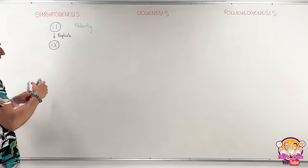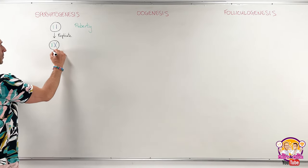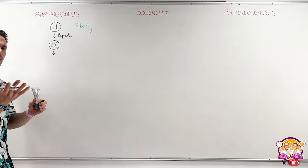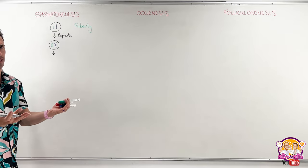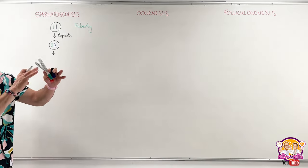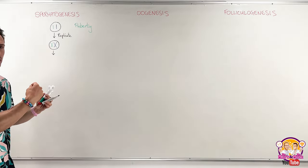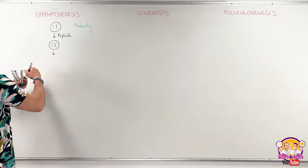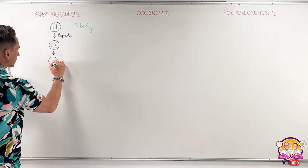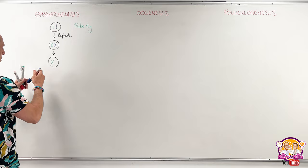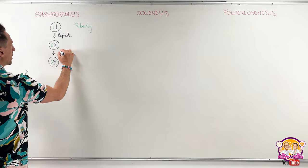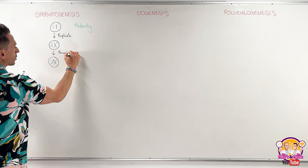Next, we undergo a process called recombination — swapping some genetic material. Chromosome one from mum and chromosome one from dad are nearly identical, and arms of these chromosomes can cross over and swap alleles or genes. If we draw this recombination up, these arms are crossing over — that's recombination.